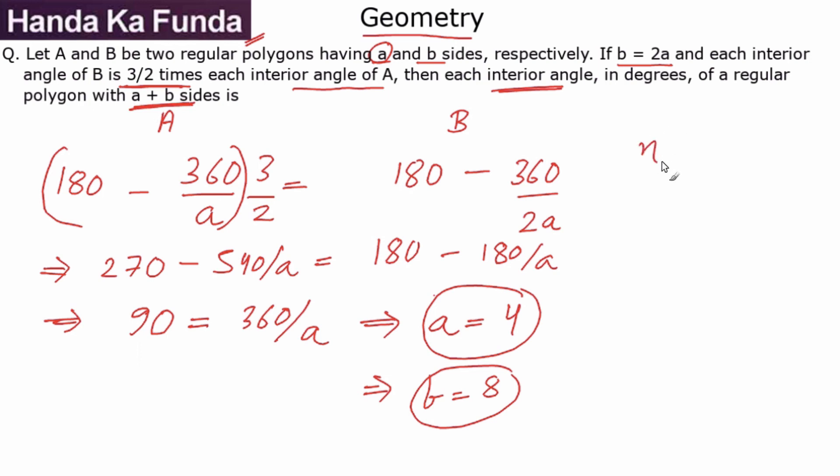So, now my polygon has N equal to 12, 4 plus 8 that is the number of sides. So, each exterior angle for this particular polygon is going to be 360 by 12 or 30 which means each interior angle for this particular polygon which has A plus B sides will be 180 minus 30 or 150 degrees and that is the value that we were looking for.